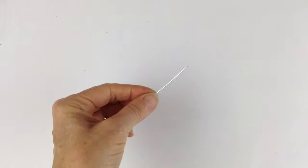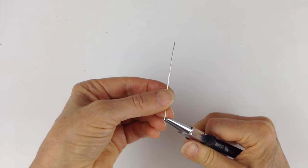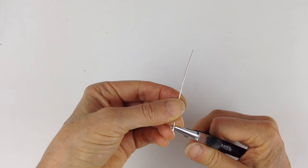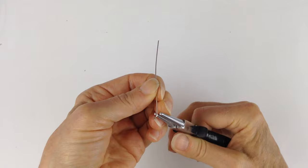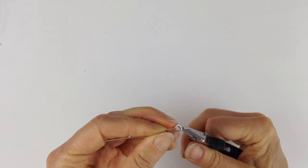And then what you're going to do is just imagine how much you want to poke into the leather. So I'd say not too much, maybe about a quarter inch. And then we're going to bend that, and then you're going to make a little loop around like that.